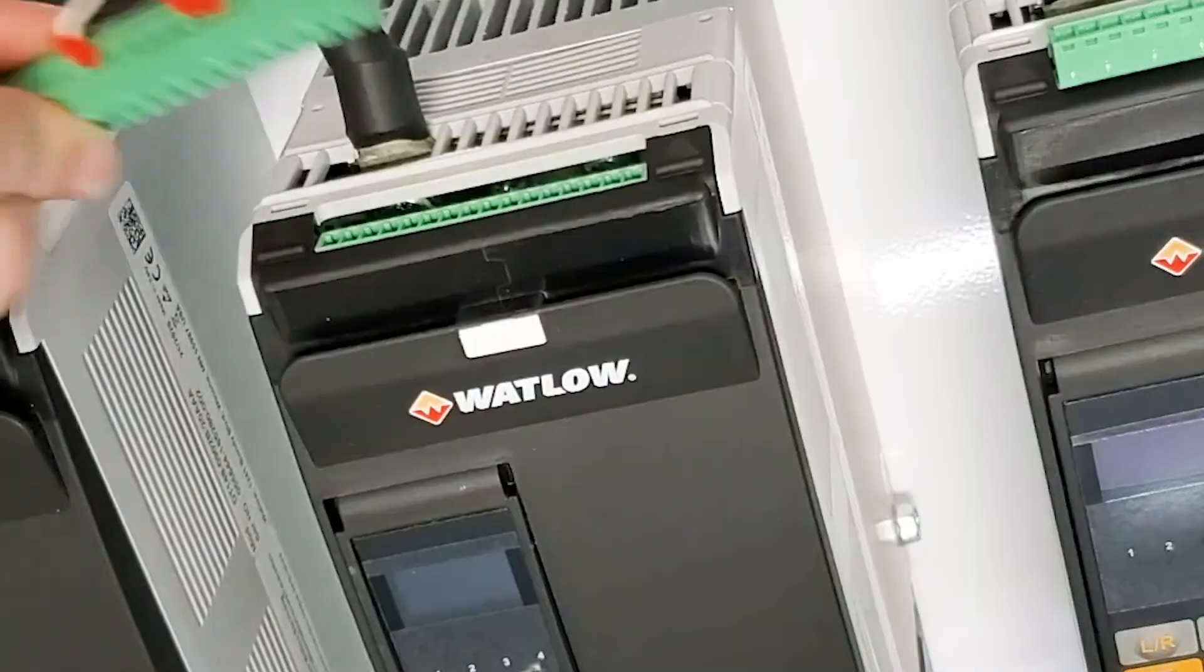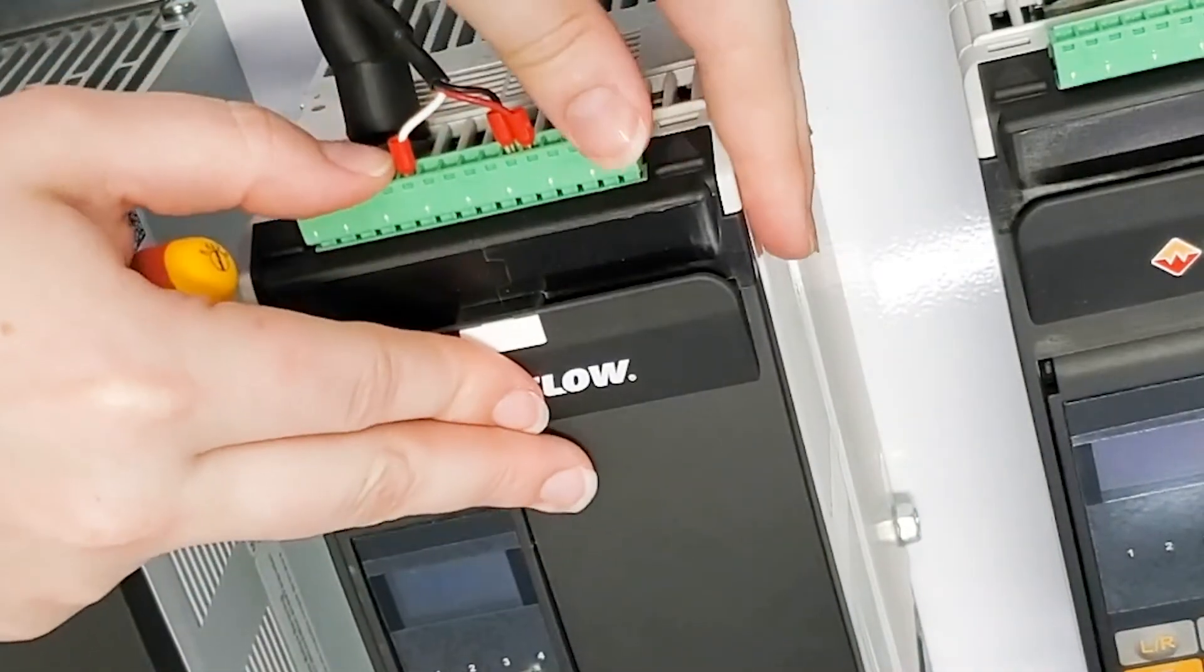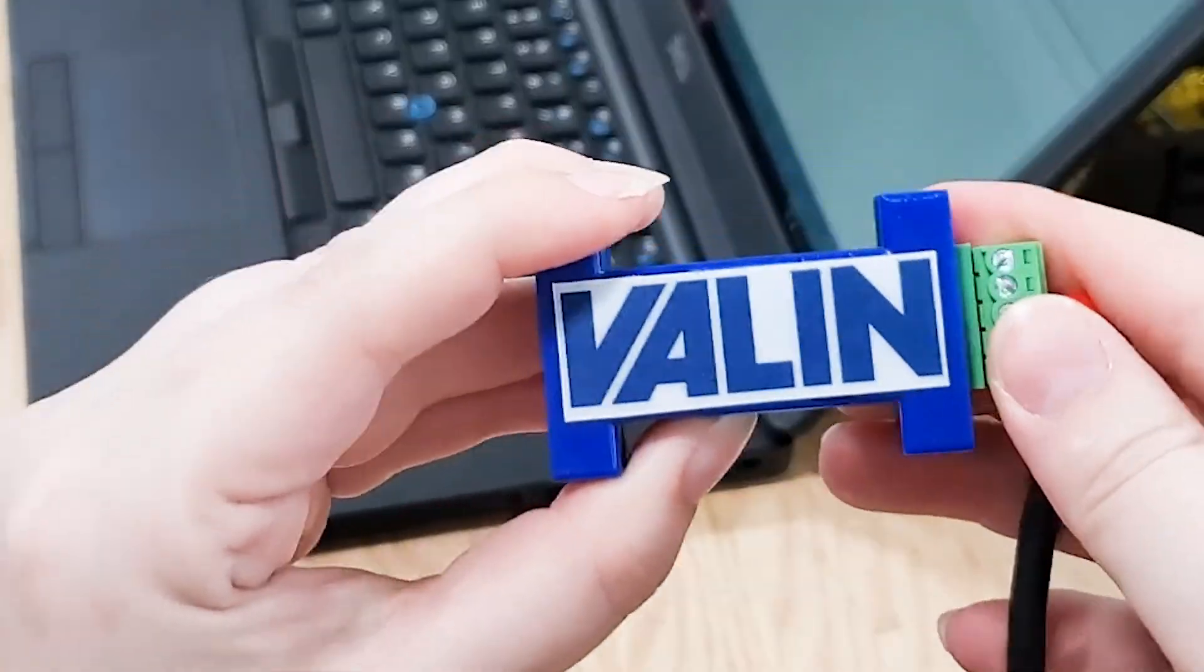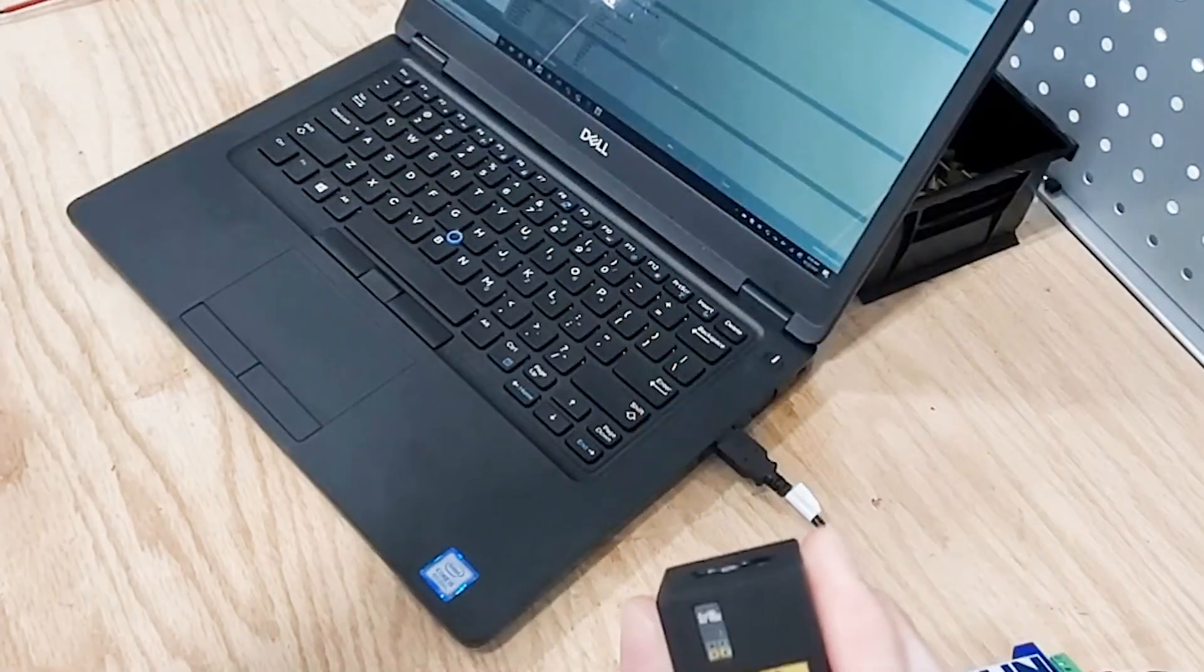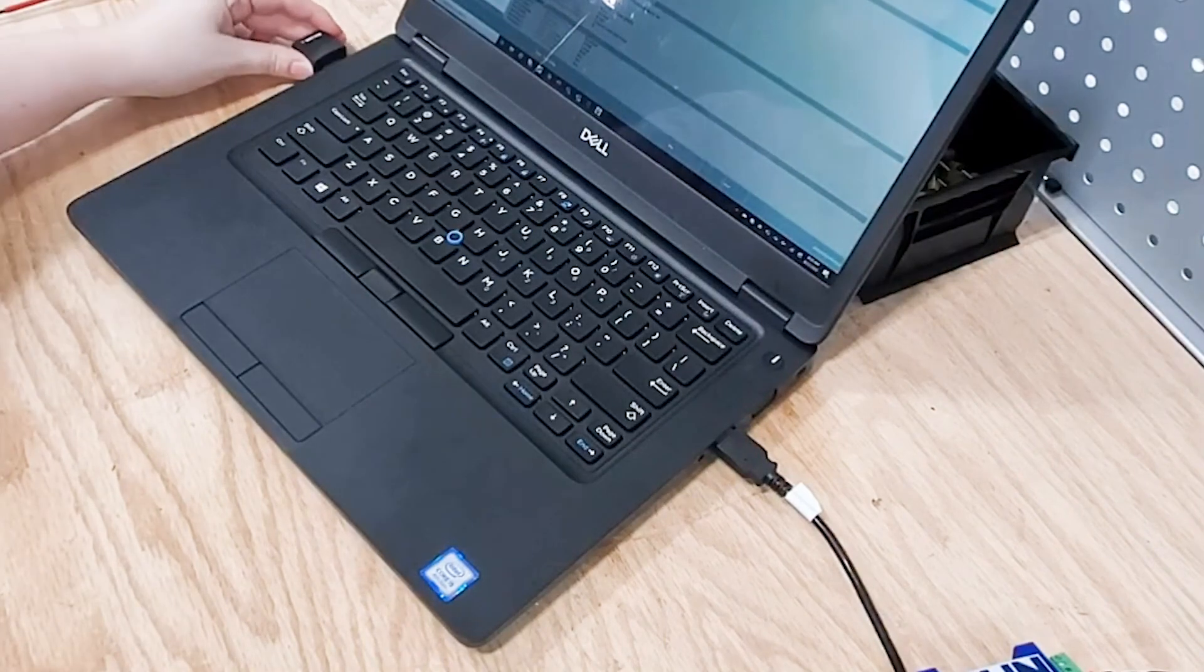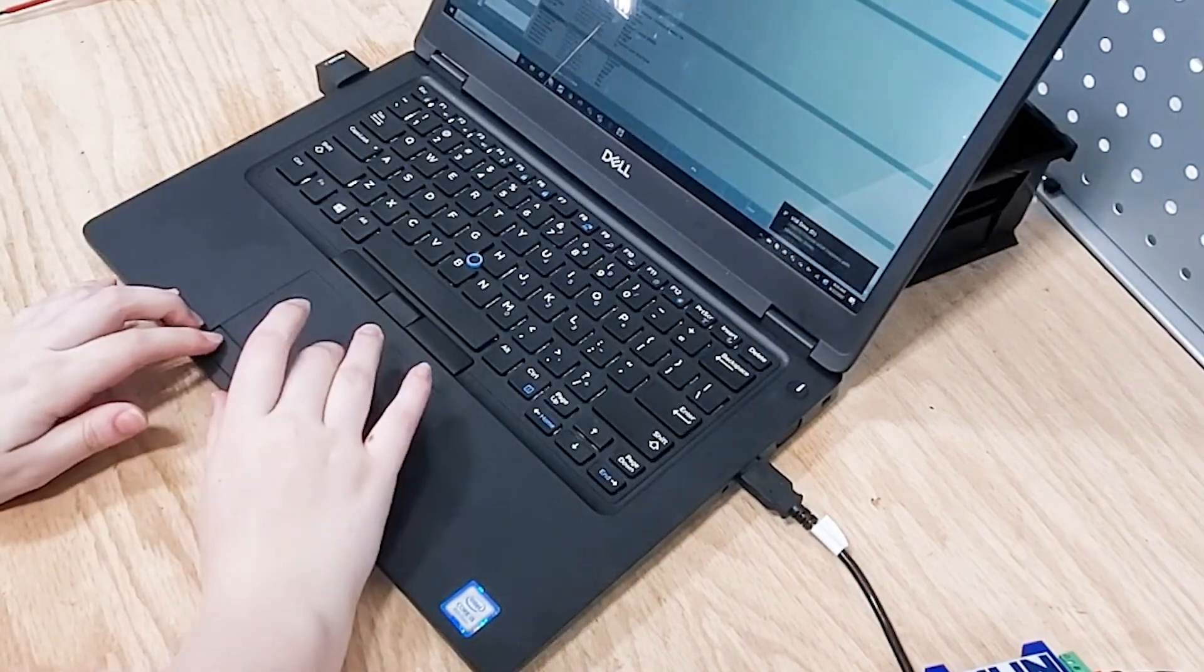Here's a pro tip for you. For scenarios where you have multiple Aspire units, you can also upload the recipe from one Aspire into a USB drive and then download that recipe into the other controllers simply by plugging the USB in and importing the parameters.